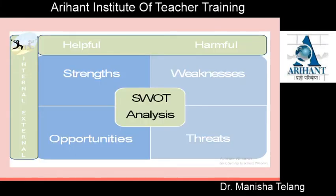This is the matrix for SORT analysis. The internal factors are strength and weaknesses, and the external factors are opportunity and threats. Strength and opportunity are helpful to you, while weaknesses and threats are harmful to you.